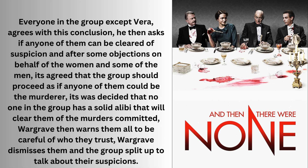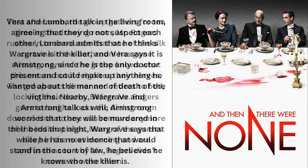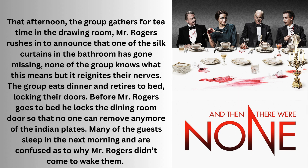Wargrave warns them all to be careful of who they trust, then dismisses them and the group splits up to talk about their suspicions. Vera and Lombard talk in the living room — agreeing they do not suspect each other, Lombard admits he thinks Wargrave is the killer, and Vera says it is Armstrong, since he is the only doctor present and could fabricate anything he wanted about the manner of death. Nearby, Wargrave and Armstrong talk as well. Armstrong worries they will be murdered in their beds that night, while Wargrave says he believes he knows who the killer is. That afternoon, Mr. Rogers rushes in to announce that one of the silk curtains in the bathroom has gone missing, which reignites their nerves.